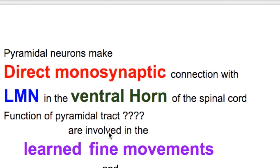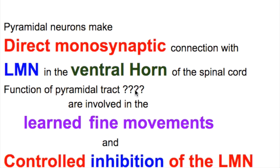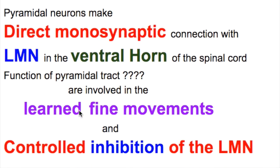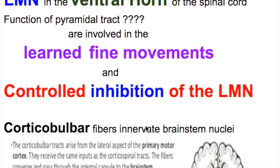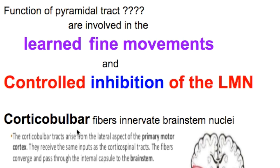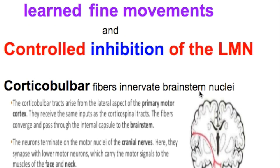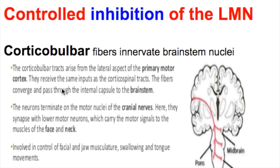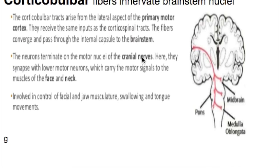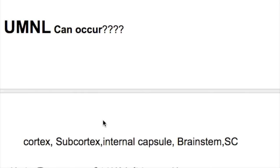The functions of the pyramidal tract include involvement in learned fine movements and control inhibition of the lower motor neuron. The corticobulbar fibers innervate the brain stem nuclei — they also arise from the primary motor cortex and end in the brain stem on the cranial nerve nuclei, controlling the face and neck.